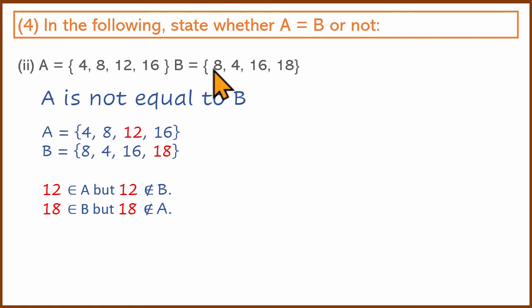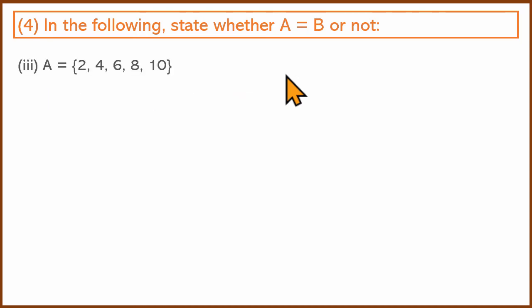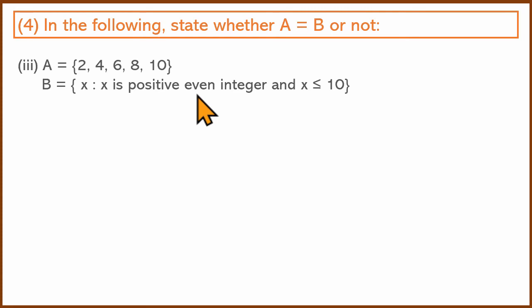The number of elements has to be the same and every element has to match. Set A is {2, 4, 6, 8, 10} and B is in Set Builder Notation — positive even integers less than or equal to 10. This is A equals B.